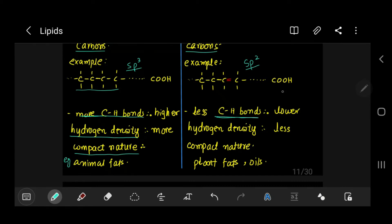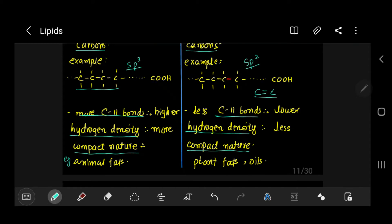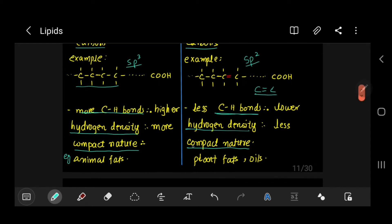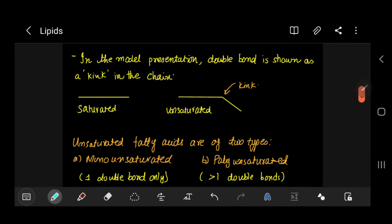On the other hand, since we have less carbon-hydrogen single bonds, we have double bonds with the carbon. This reduces the hydrogen density, so we have a less compact nature. That means they are not very closely packed together. Examples include plant fats and oils.